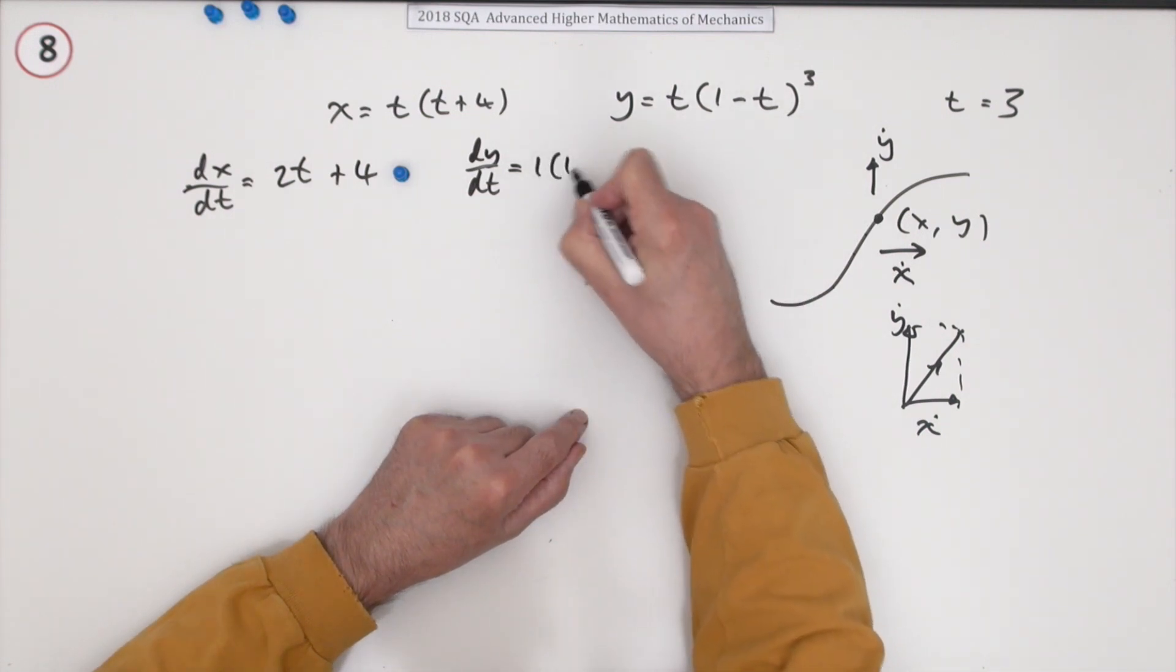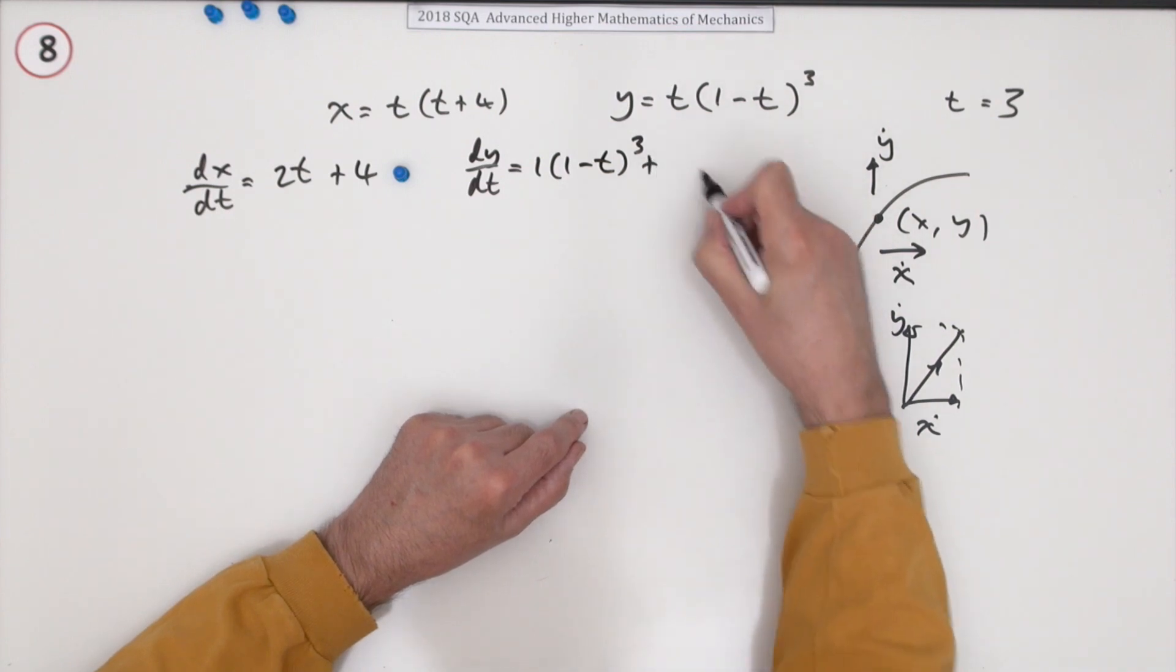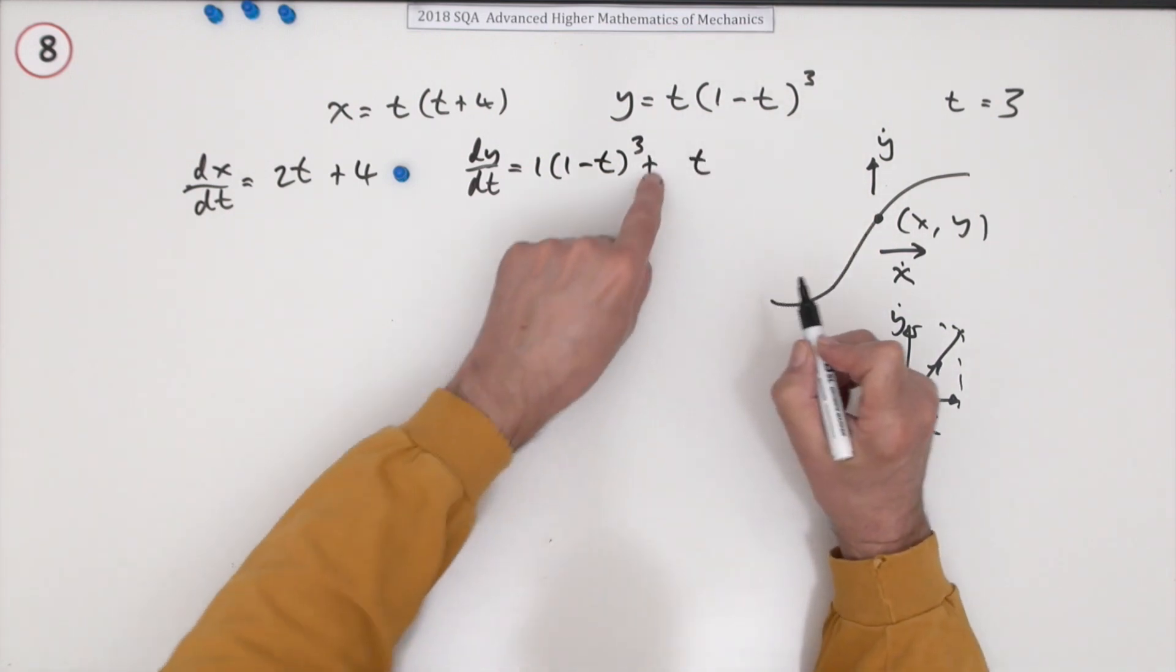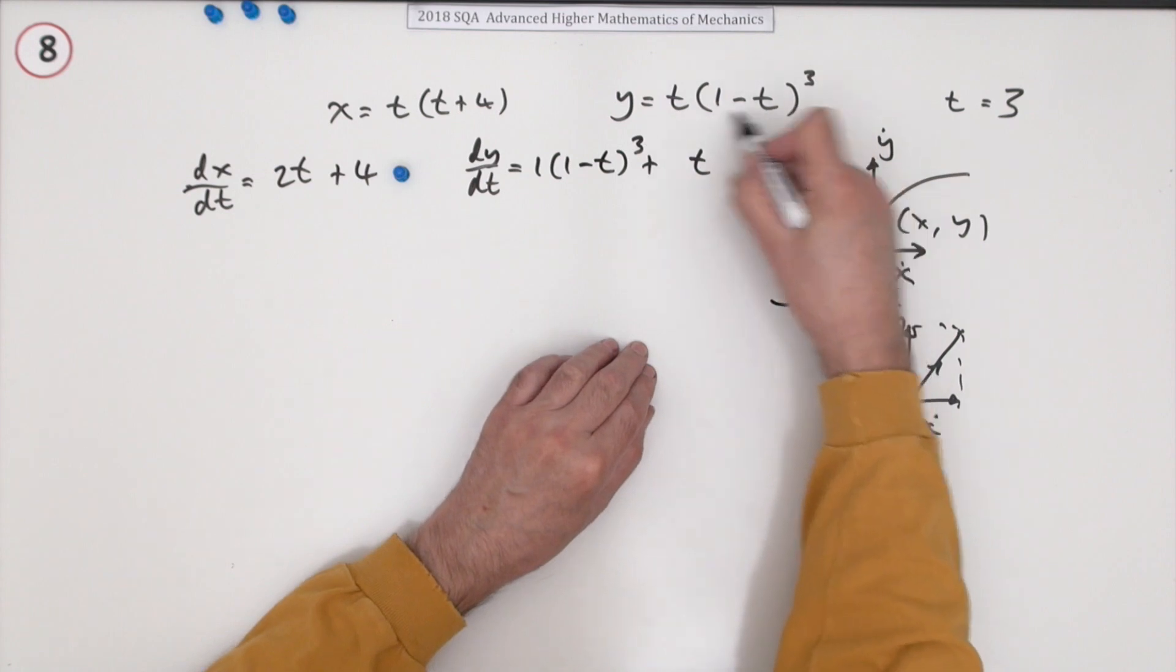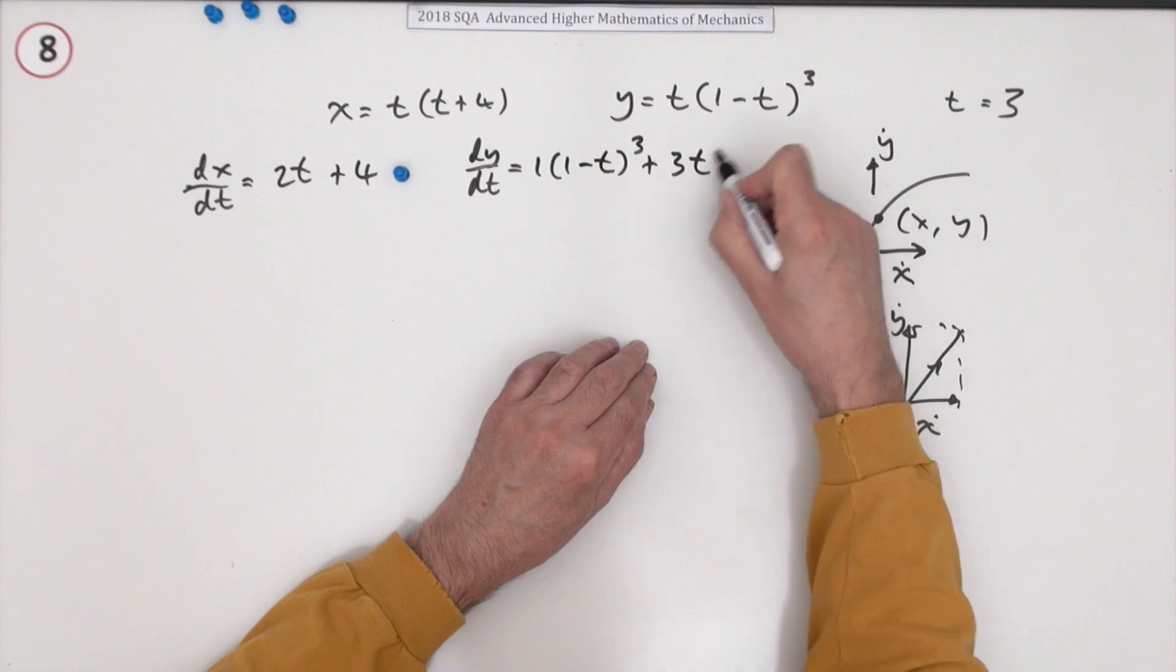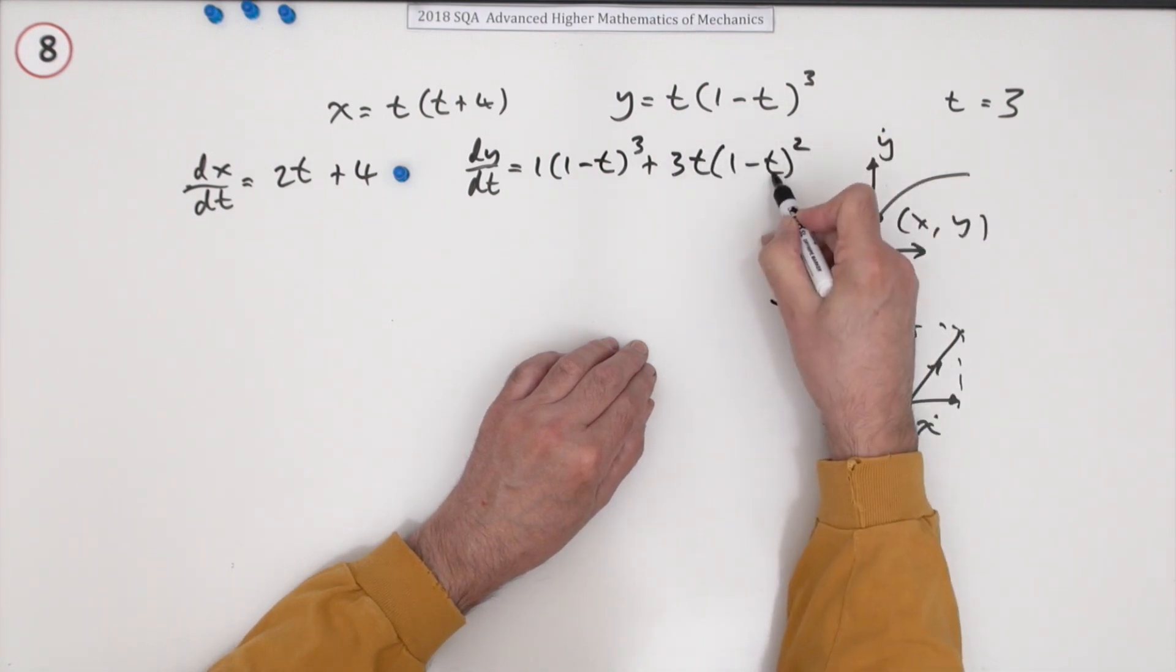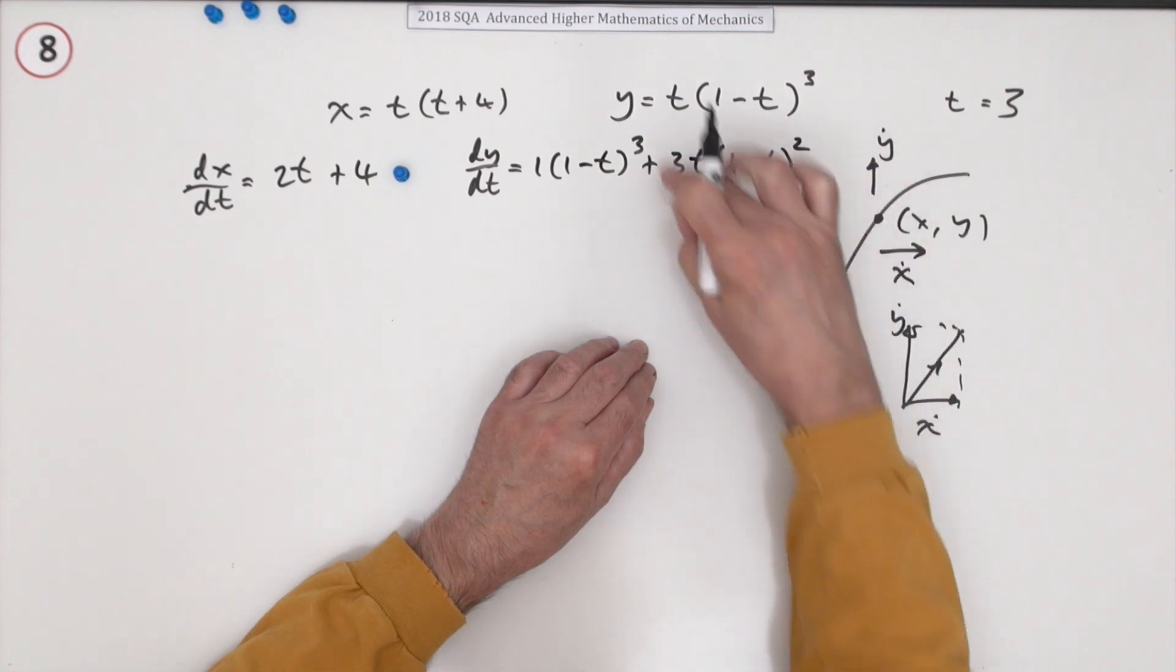So that'll be 1 times (1 minus t) cubed, differentiating the t, plus now leave the t alone, which I'm writing the plus now, and differentiate this part. Function of a function: outer function cubed, so multiply by the power, take one off the power, inner function (1 minus t), its derivative is negative 1.